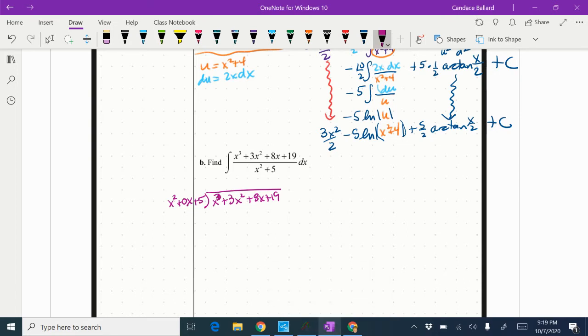So first thing I do is I ask myself, how many times does x squared go into x cubed? And it goes in x times. Then I'm going to distribute this through. x times x squared is x cubed. x times 0x is 0x squared. x times 5 is 5x.